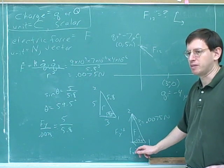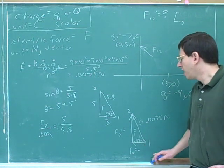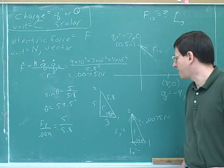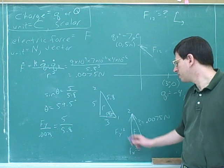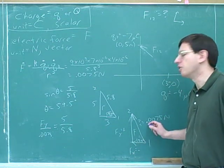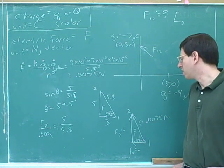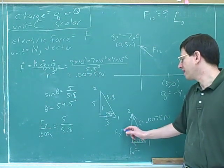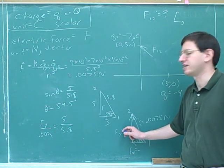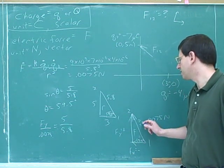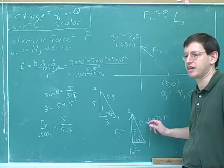We can do the same thing to find f sub x. Here's a good thing to notice: how would we indicate the direction of these components? We can indicate the direction of components with their signs, but you can't do that for an overall vector. Overall vectors don't have signs, because a component parallel to the axis is positive, and a component anti-parallel to the axis is negative — but the overall vector is neither parallel nor anti-parallel to an axis.